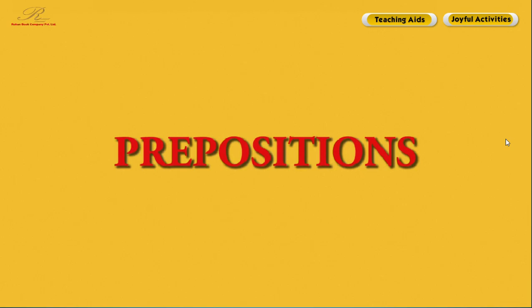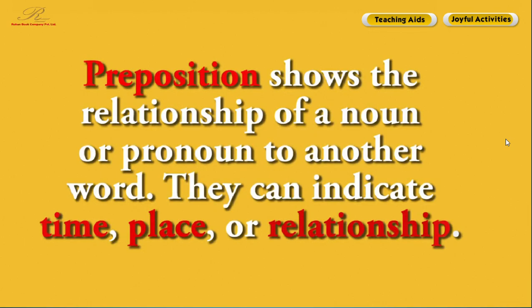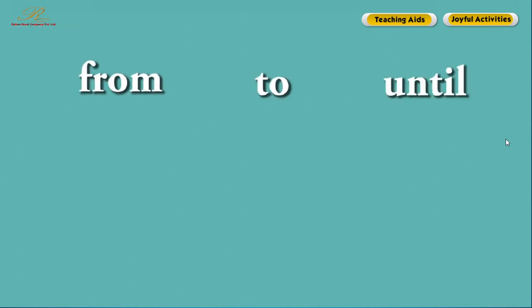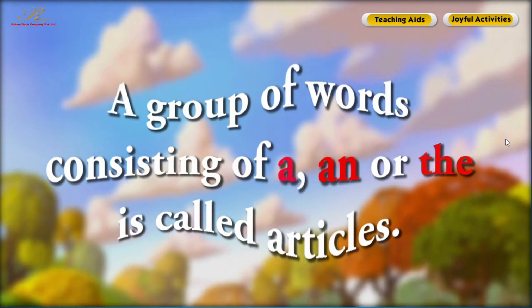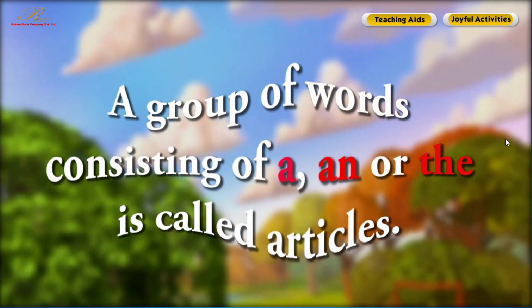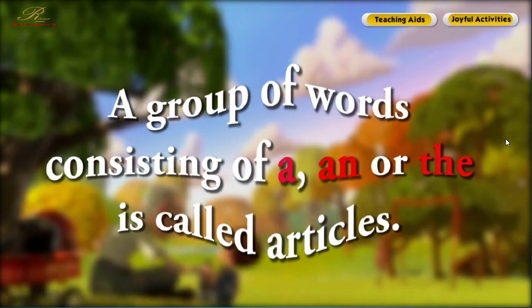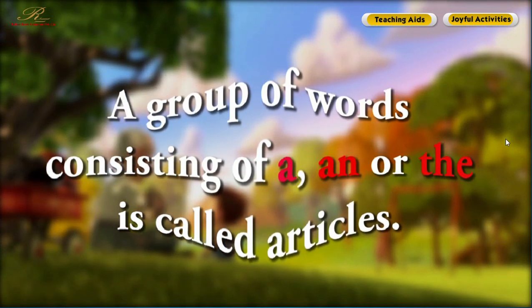Prepositions. A preposition shows the relationship of a noun or pronoun to another word. They can indicate time, place, or relationship. For example: from, to, under, over. A group of words consisting of a, an, or the is called articles. For example: a dog, an apple, the boy.